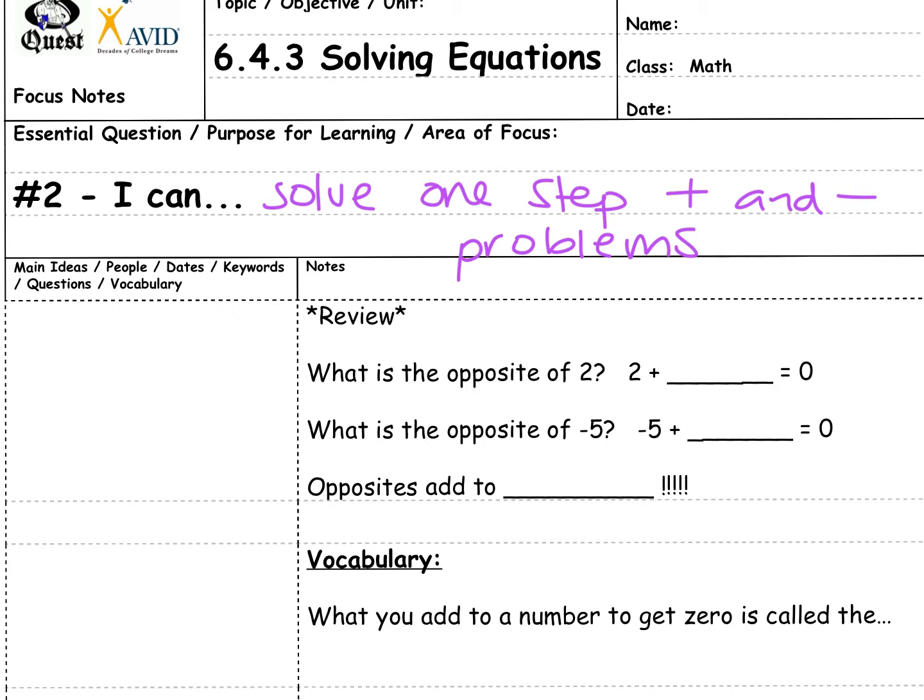Thinking back to what we previously learned, what is the opposite of positive 2? Well, it's negative 2, and when I add opposites together, 2 plus negative 2 equals 0. What is the opposite of a negative 5? It would be a positive 5.